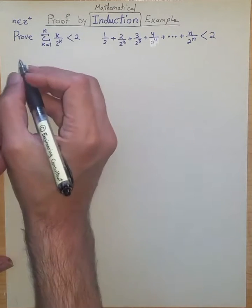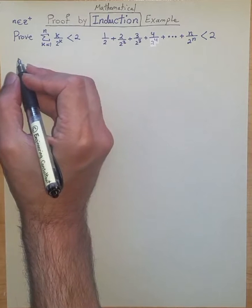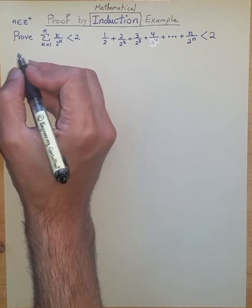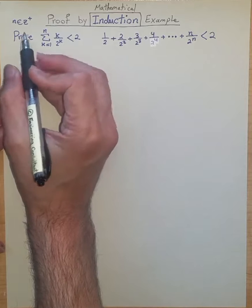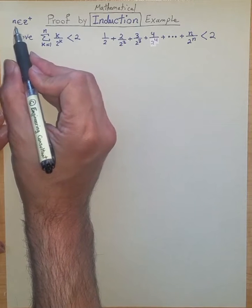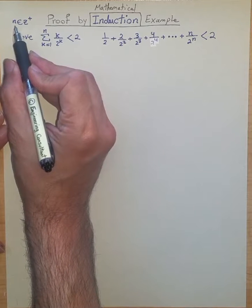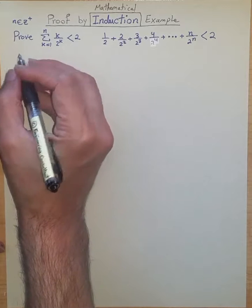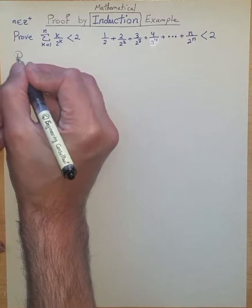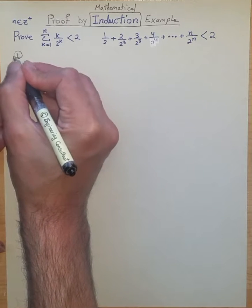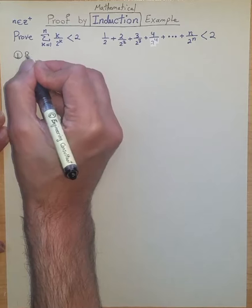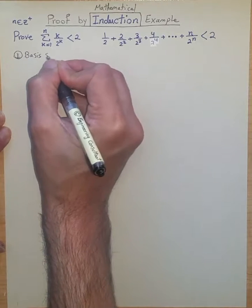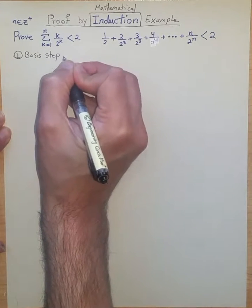Using mathematical induction, similar to dominoes, we need to start from the basis point — the starting point — which means we consider the smallest acceptable value for n, which is n = 1 as a positive integer. So let's deal with the basis step using the basis point of n = 1.